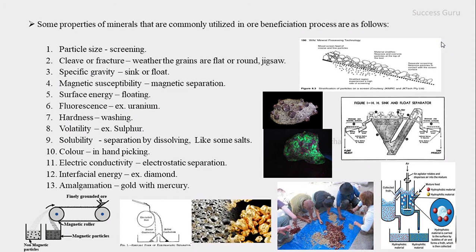The next property used is amalgamation — dissolving a metal with the help of mercury. For example, if you have gold mixed with a gang mineral and you put it in mercury, the gold will dissolve in mercury while the gang will not. By this way you can simply separate the gold from the gang mineral.